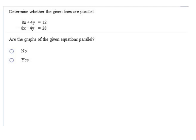Now that we know what parallel and perpendicular lines are, let's try to figure out whether some lines that they give us are parallel or perpendicular, or possibly none of those. So they've given us here two equations, and in these equations they're asking us to determine whether the given lines are parallel.